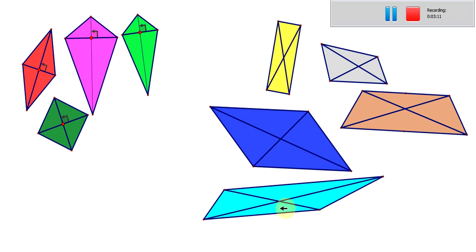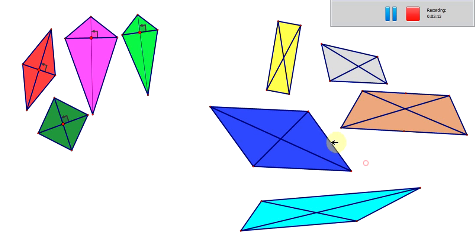So that's the first thing of interest. Some of them do, some of them don't. Now, there are other things that are interesting. Some of them, some of these shapes, the diagonals split each other in half.